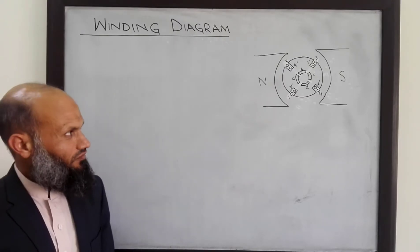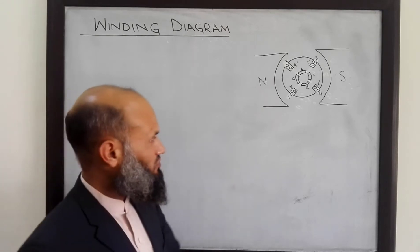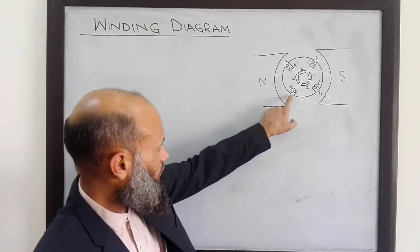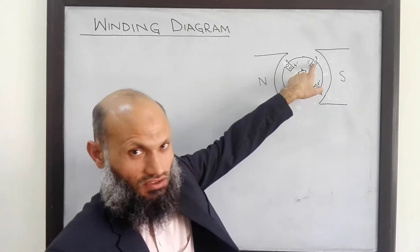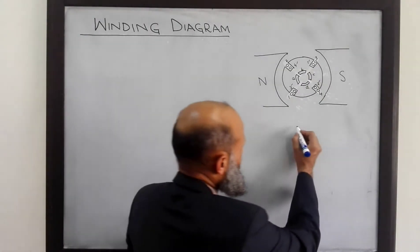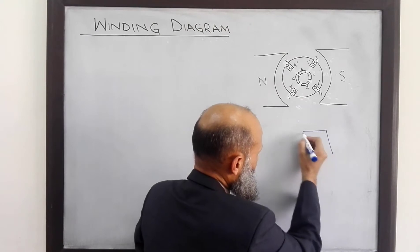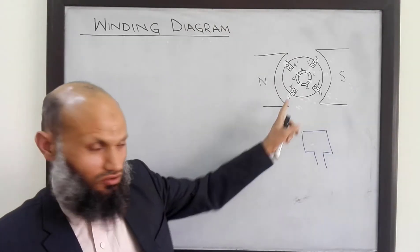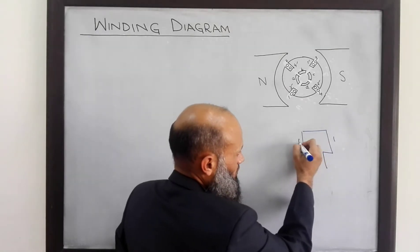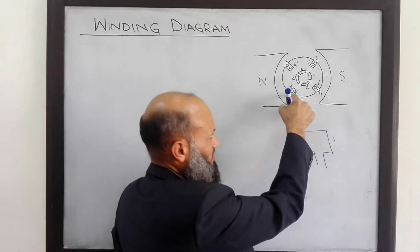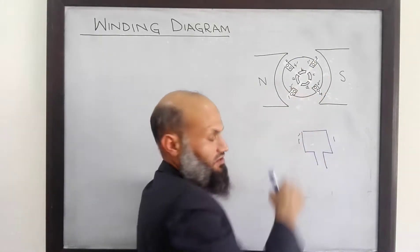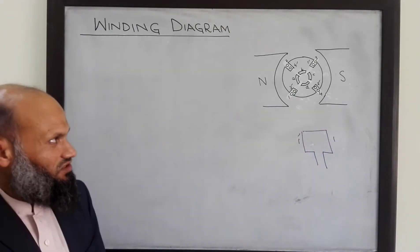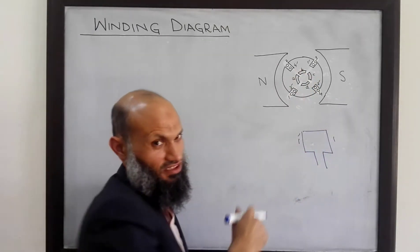Here we have a simple DC machine with four coils. This is coil one, and the other side of this coil is one dash. Each coil is a rectangular coil, and over here we have only shown the sides of this coil: one and one dash. One is shown over here, one dash is shown over here. At the back end, one and one dash are shorted, which is not visible in this diagram.